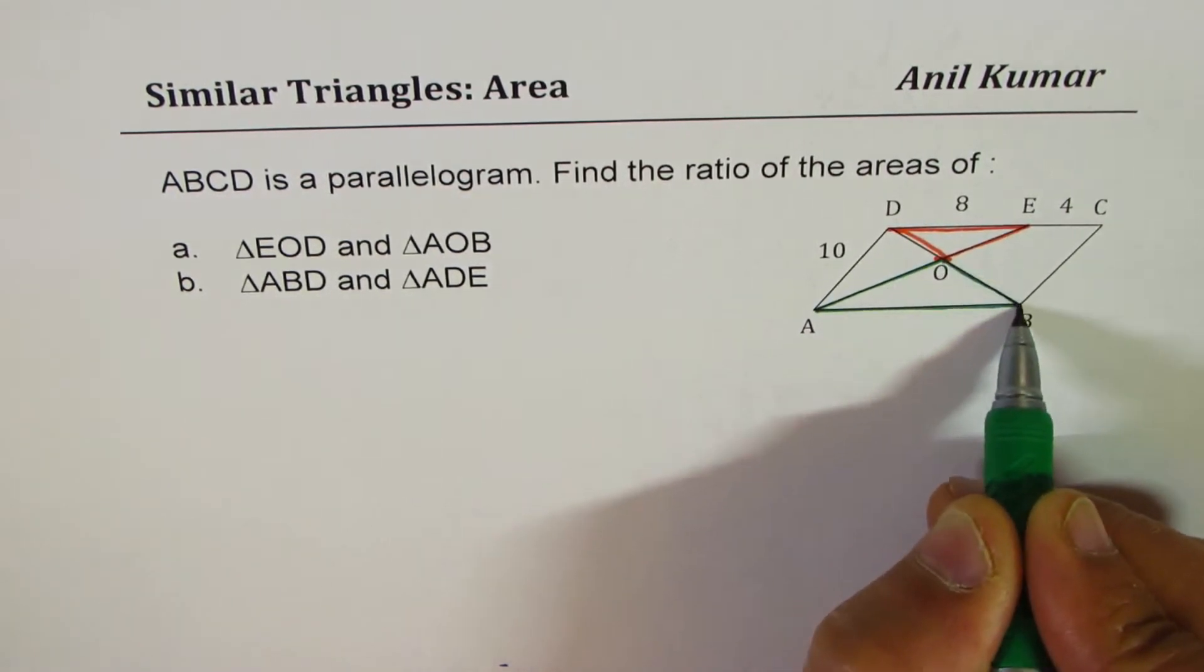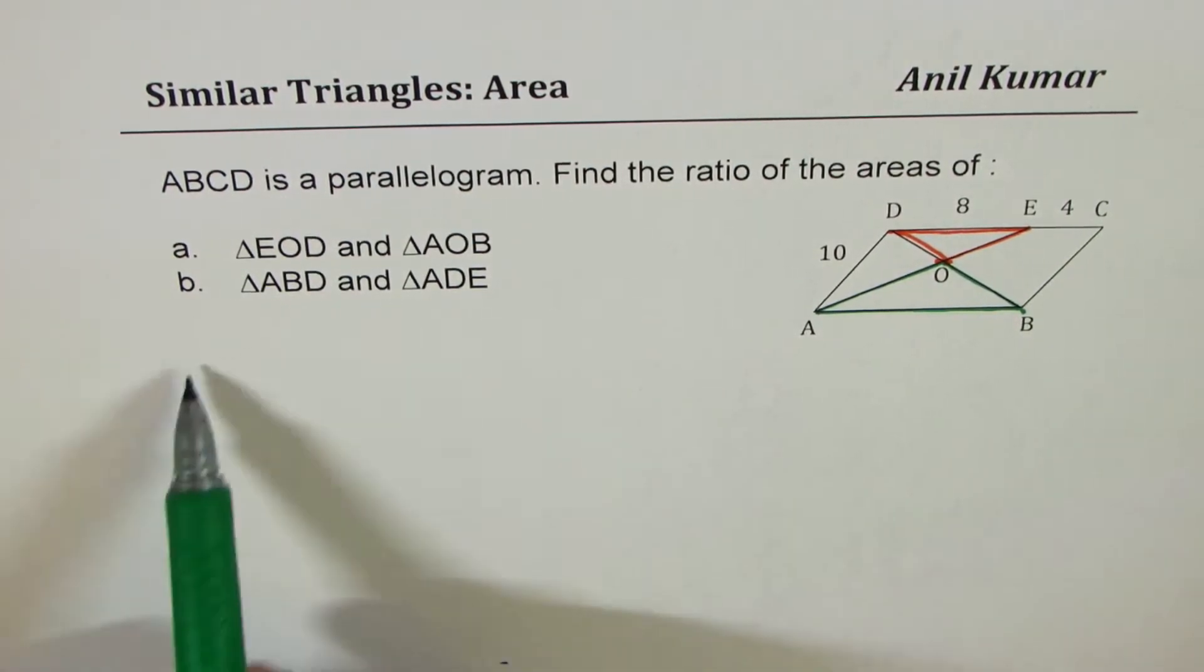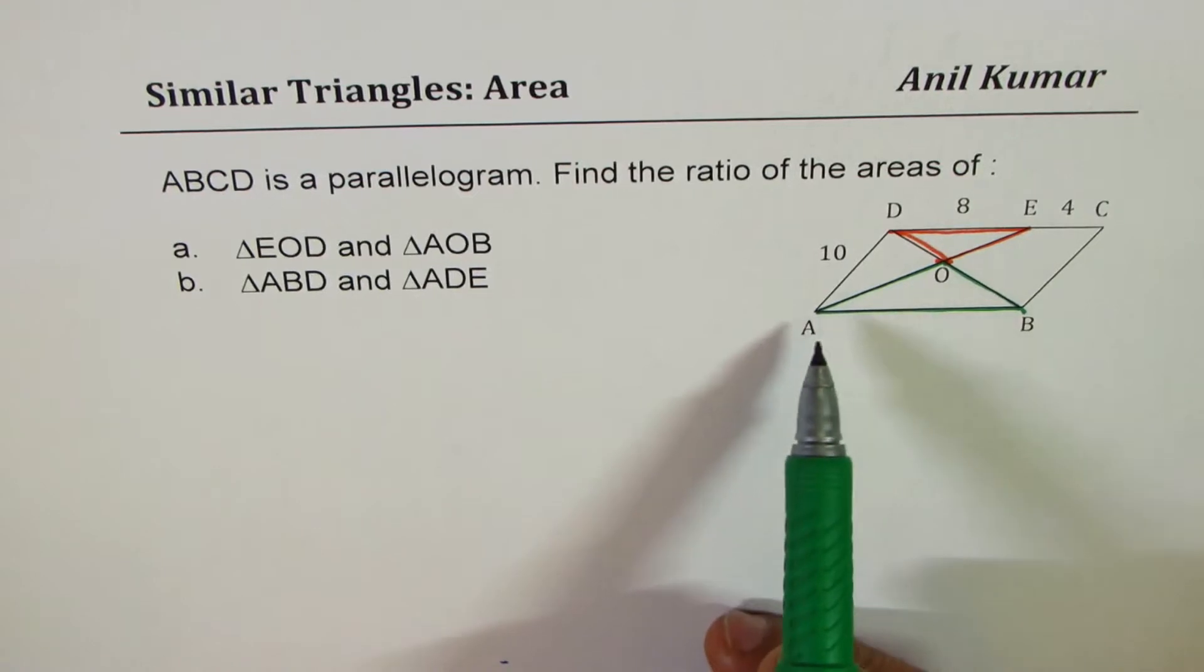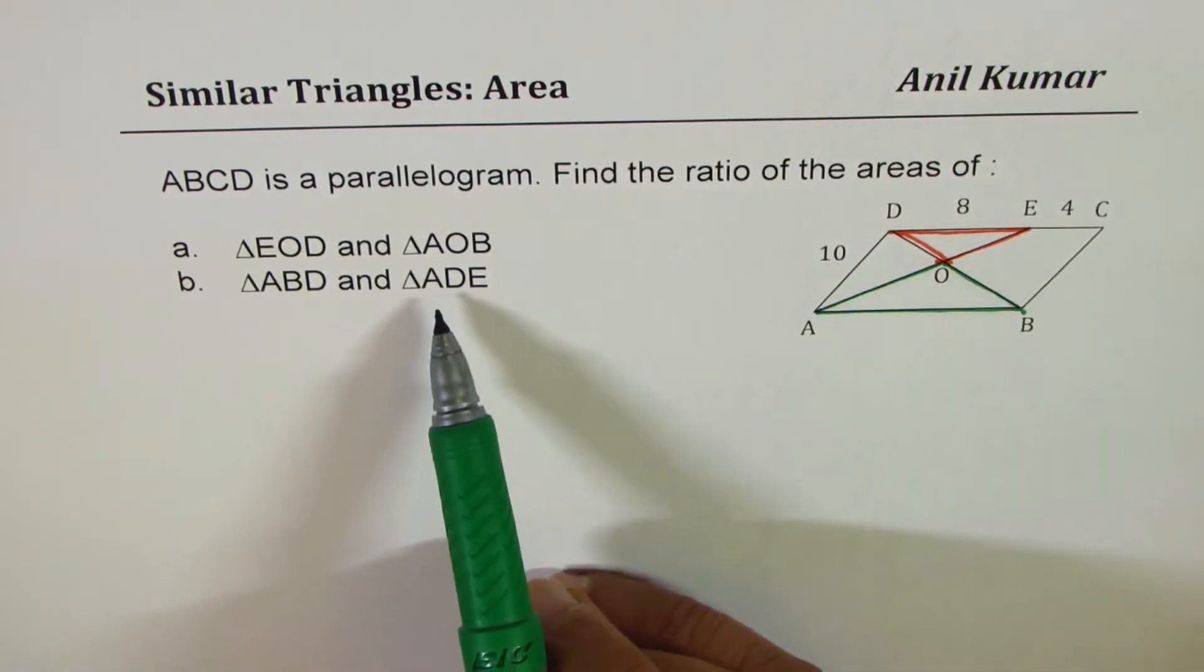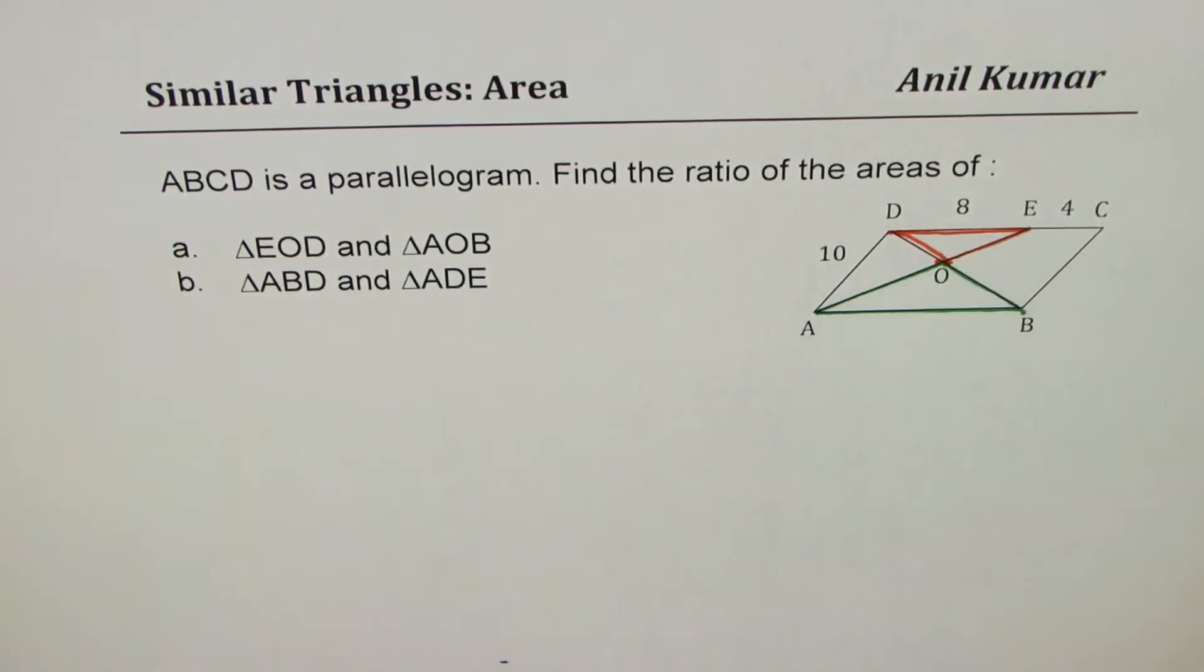So these two are similar triangles so we can easily find the ratio. The second is triangle ABD, ABD that means this big triangle, and ADE, ADE that triangle. So these two triangles.